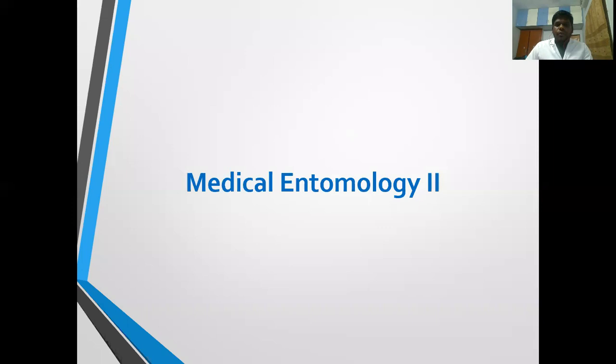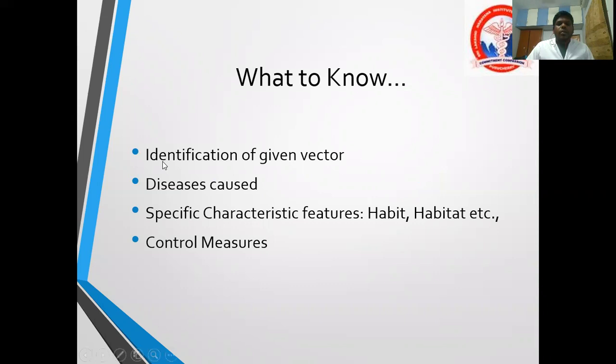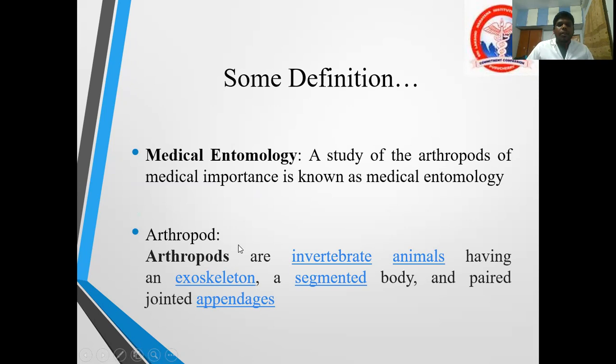So under this topic, we have to know how to identify the given vector, the diseases caused by those vectors, any specific characteristics that vector has, and what are the control measures for the disease caused by the given vector. These are the things we have seen in the last class. I am just brushing up things.